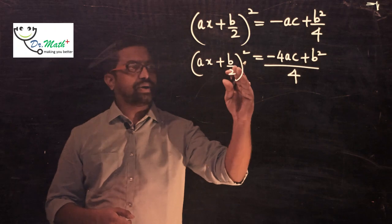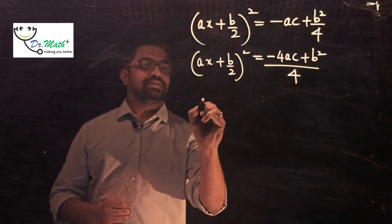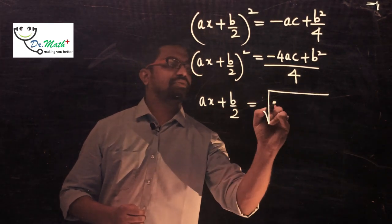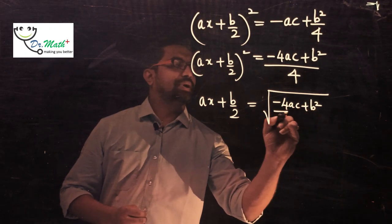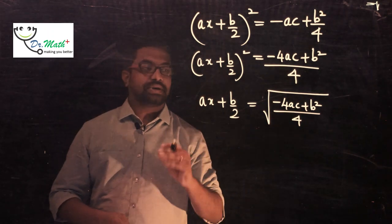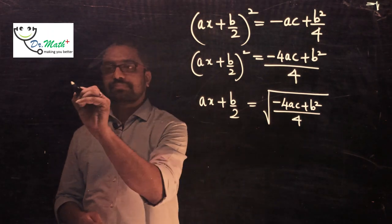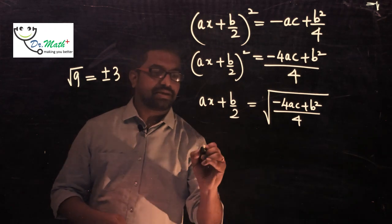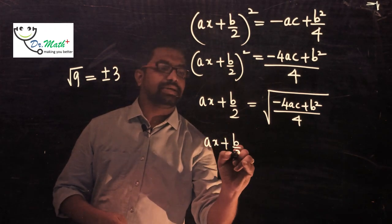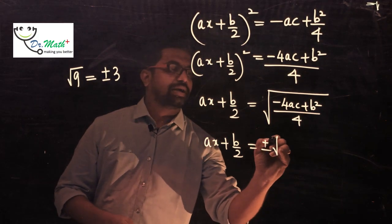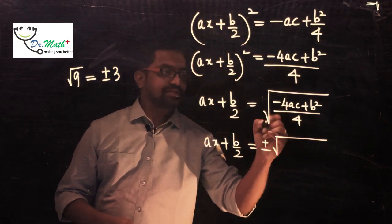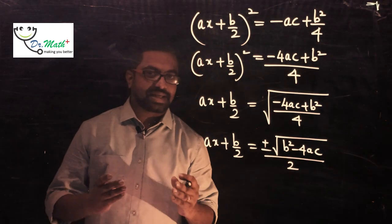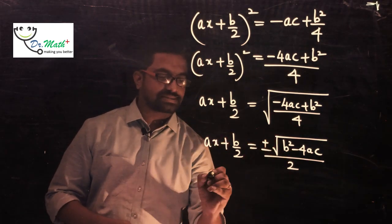Shifting the square to the right-hand side, it becomes a square root: ax + b/2 = √((b² − 4ac) / 4). When you take the square root of a number — for example, √9 = ±3 — we write ax + b/2 = ±√(b² − 4ac) / 2.